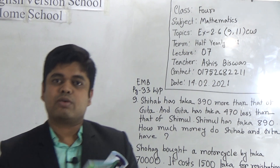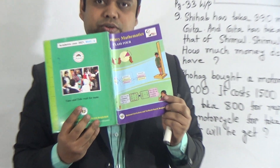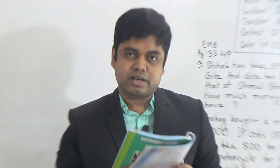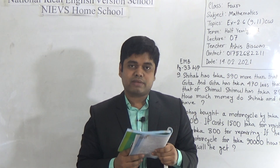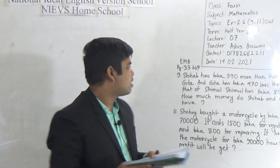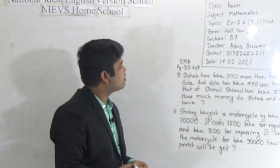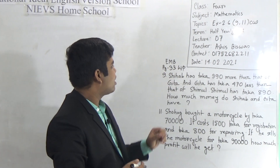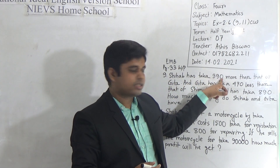My dear students, this is your book — I think all of you have this book. Open page number 33. From page number 33 we shall solve word problem number 9 and word problem number 11. I have already written these two problems on the board, so please notice. Problem 9: Shihab has taka 390 more than that of Gita.